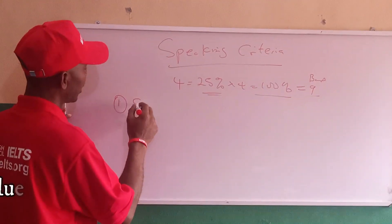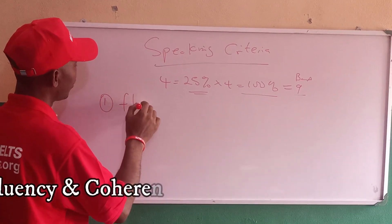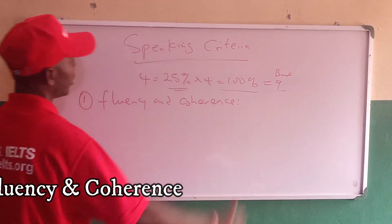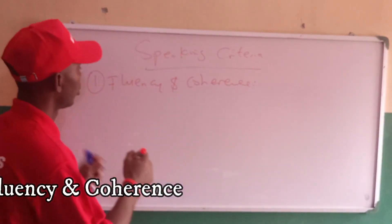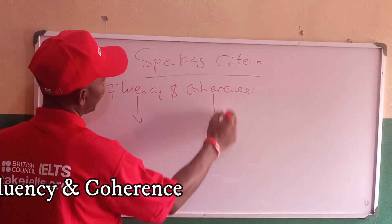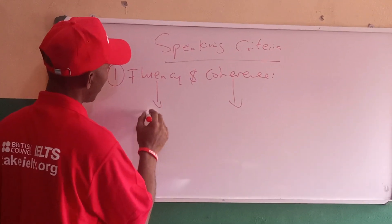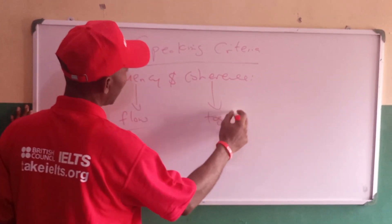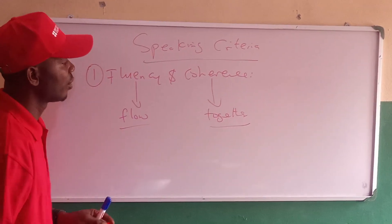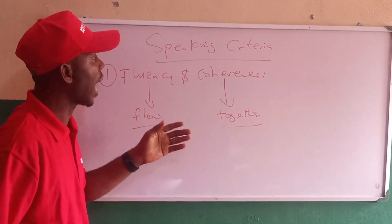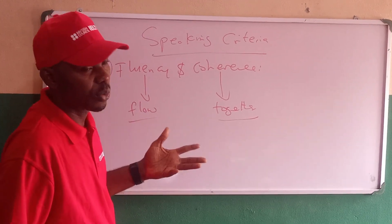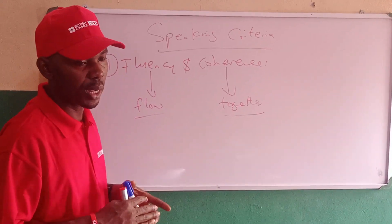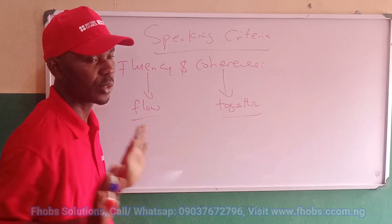The first criterion is called fluency and coherence. I would like to give each of them a word you can always remember. Anytime you hear fluency, remember 'flow.' Anytime you hear coherence, remember 'together.' So the IELTS examiner assesses your ability to flow as you speak — that is your ability to speak without long pauses, self-correction, or repetition. Your ability to flow as you speak.